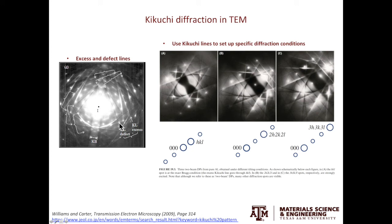After understanding what causes Kikuchi diffraction, let's look at how we can use Kikuchi lines. The first use is that Kikuchi lines can help us with tilting. In the example shown here, we have the direct beam and the diffracted beam — a classical two-beam condition with one G excited. In the middle tilting condition, one G is pretty dim but two G is bright, so this is a two-beam condition with two G excited. In the example on the right, one G is dim, two G is dim, three G is bright — a two-beam condition with three G excited. You will appreciate why this is important when we discuss weak beam dark field imaging.